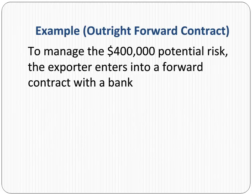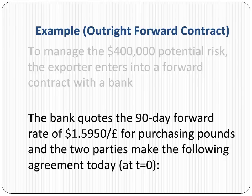To manage the potential risk of $400,000, the exporter enters into a forward contract with a bank. The bank quotes the 90-day forward rate of $1.5950 per pound for purchasing pounds.